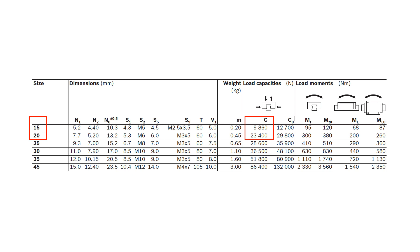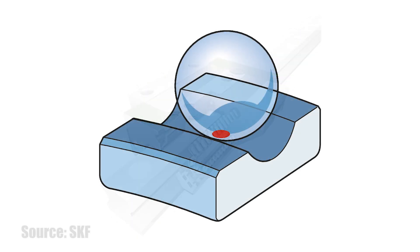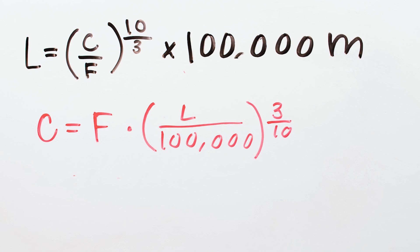The equation we just discussed was for recirculating ball bearings. Recall from our last session that the L10 bearing life equation is slightly different for recirculating roller bearings, because the rollers make line contact with the raceways as opposed to point contact for recirculating balls. The process of solving for the required dynamic load capacity, C, is the same regardless of whether the bearing uses balls or rollers, but the final equation is slightly different. For roller bearings, the exponent for bearing life, L, is 3 over 10.